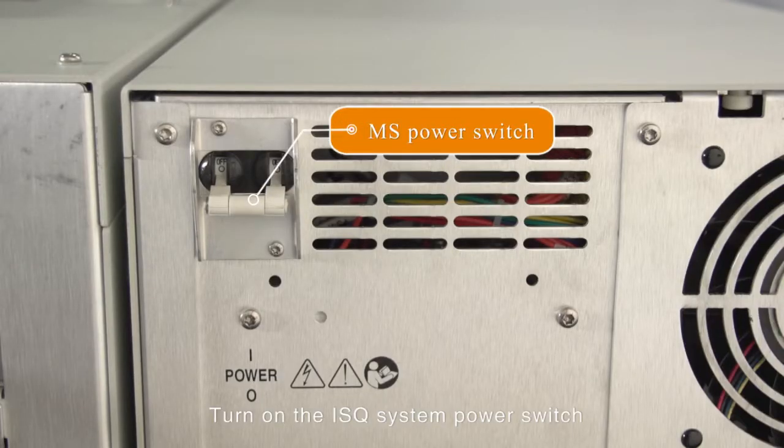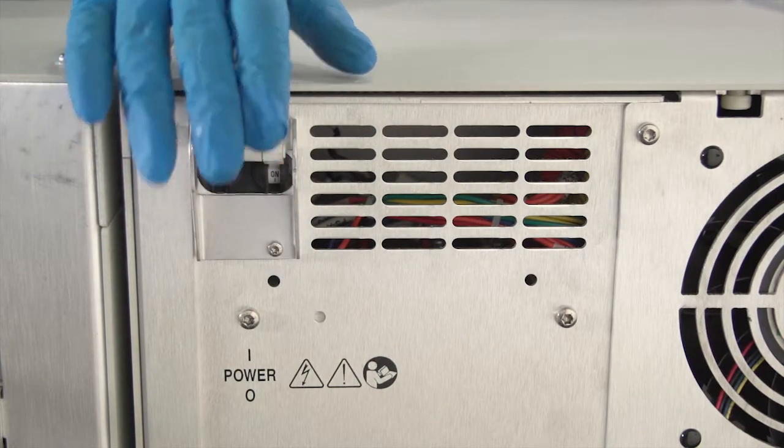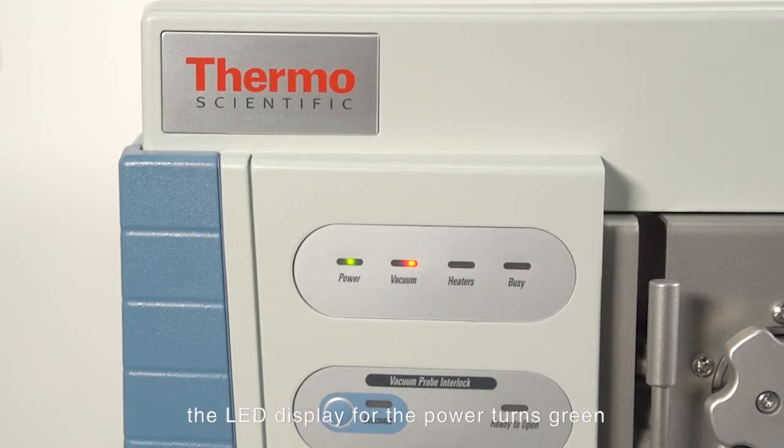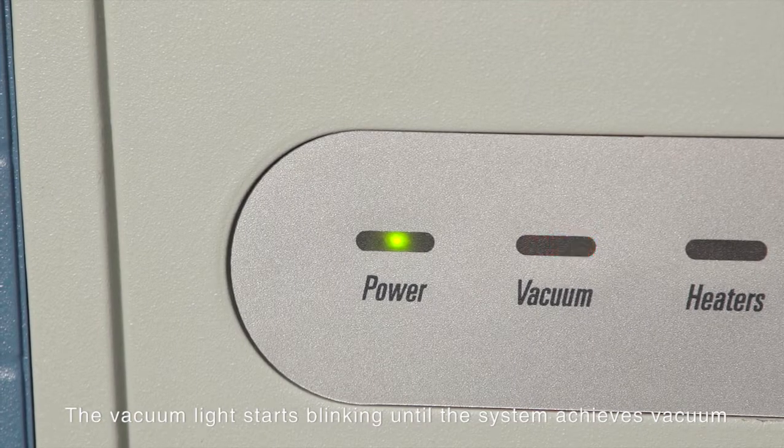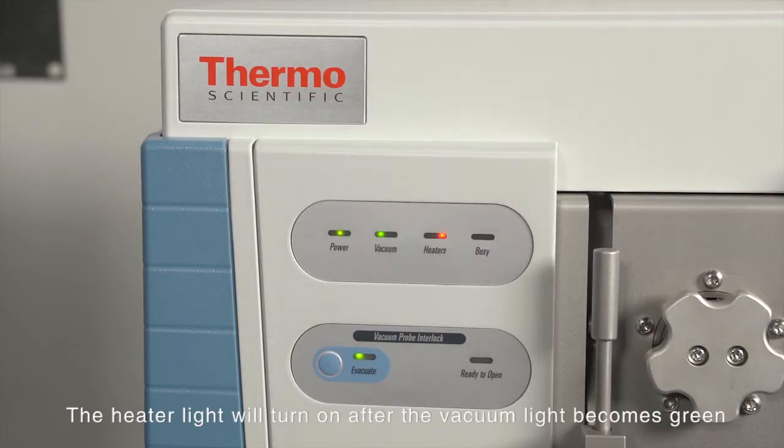Turn on the ISQ system power switch. After the ISQ system's power is turned on, the LED display for power turns green. The vacuum light starts blinking until the system achieves vacuum. The heater light will turn on after...